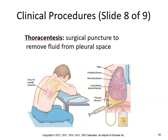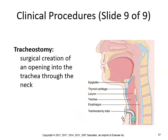Thoracentesis is a surgical puncture to remove fluid from the pleural space — similar to amniocentesis, which is removal of amniotic fluid during pregnancy. Tracheostomy is a surgical creation of an opening into the trachea through the neck; people who smoke heavily may need that done because of cancer.